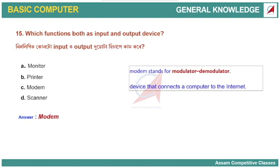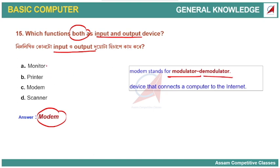Which device functions as both input and output device? The answer is modem. Modem stands for modulator and demodulator. A monitor and printer are output devices; a scanner is an input device. But a modem is used to connect a computer to the internet, functioning as both input and output device.